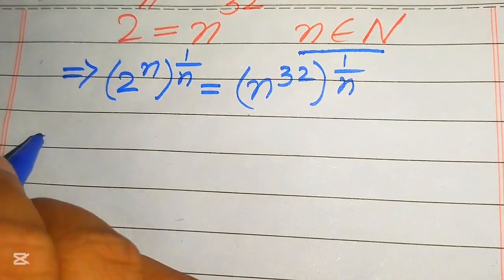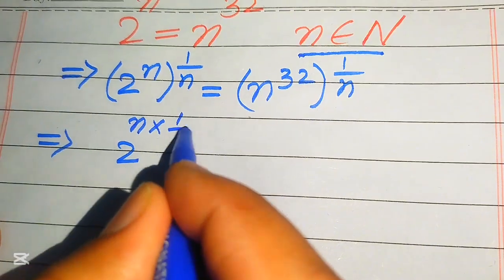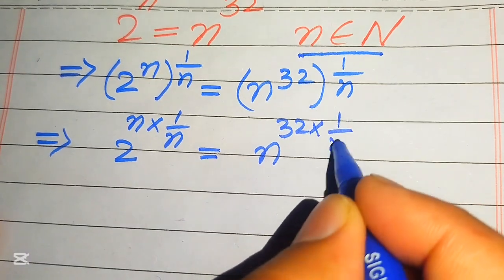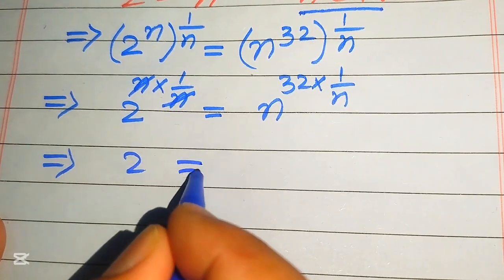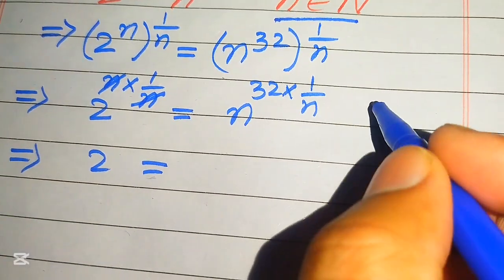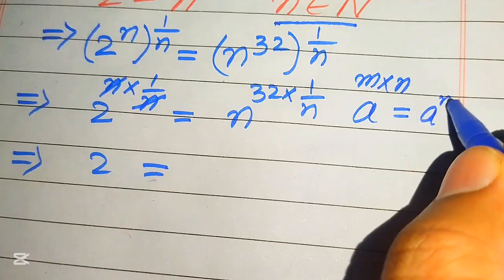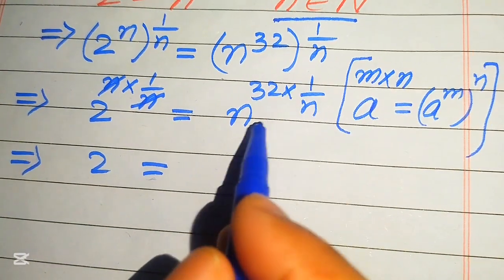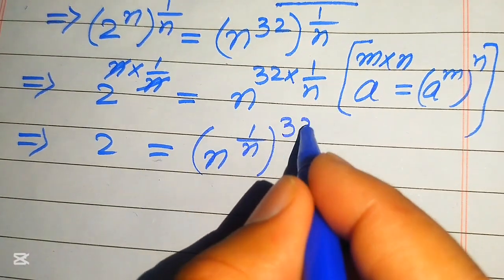In the next step we need more simplification. These two exponents are multiplied by each other, giving 2 to the power of n times 1 over n, equals n to the power of 32 times 1 over n. This n and n cancel out, leaving 2 on the left hand side. Applying the exponent law — a to the power of m times n equals a to the power of m to the power of n — we move 1 over n inside the term, giving n to the power of 1 over n, with whole power 32.